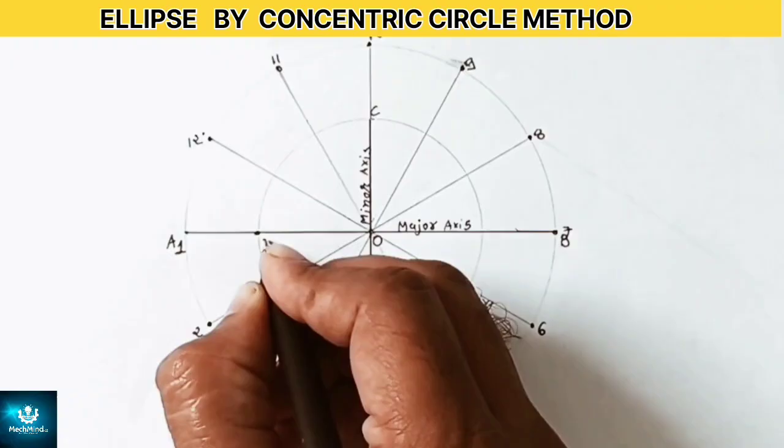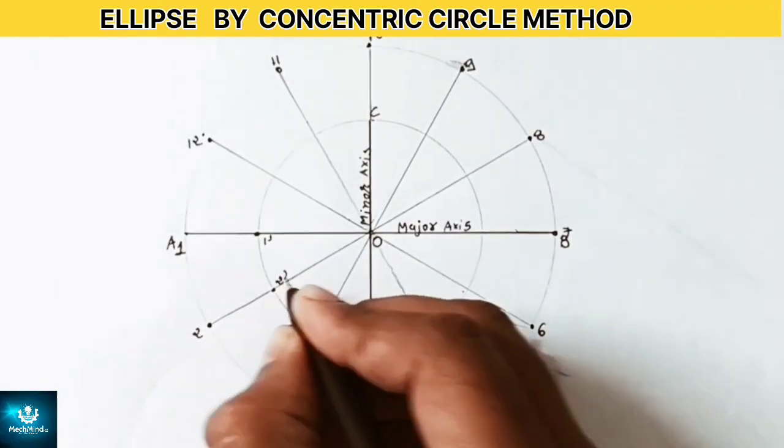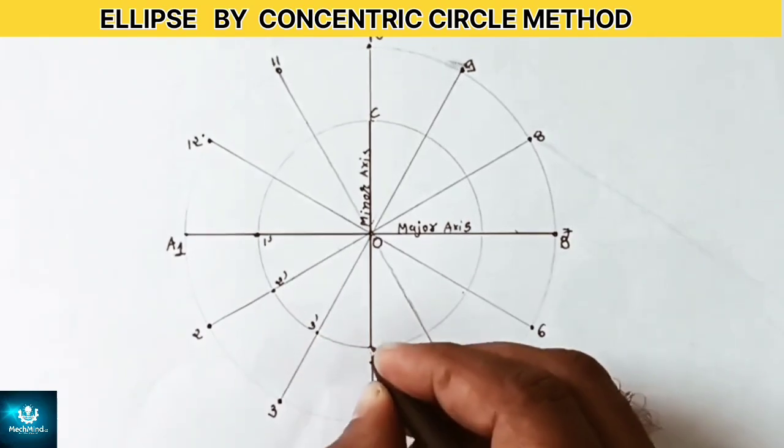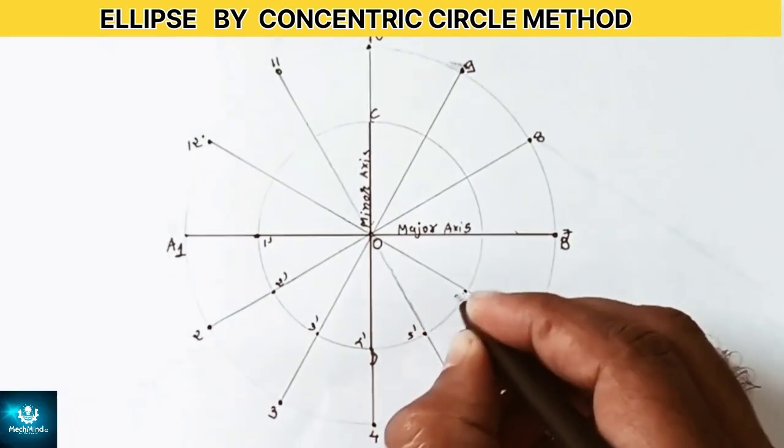Similarly name each division point on the inner circle as 1 dash, 2 dash, 3 dash, 4 dash and so on up to 12 dash.